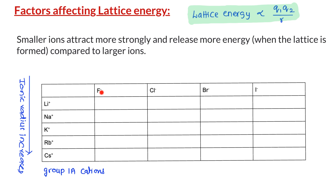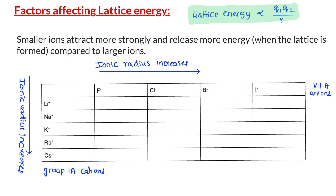Similarly, the anions — fluoride, chloride, bromide, and iodide — are all in the same group, Group 17 or 7A. And we know that down the group, ionic radii increases. So, if we fix the cation as lithium and change the anions starting from fluoride to iodide, the distance between the cation and anion is increasing. From the formula, as the distance increases, the lattice energy decreases. And here are the values of lattice energy — as predicted, it decreases with increasing distance.